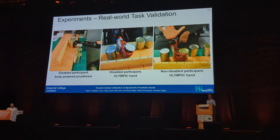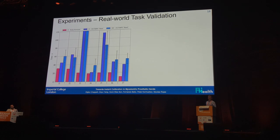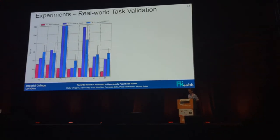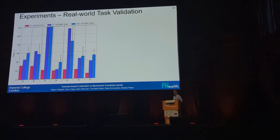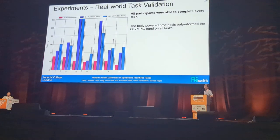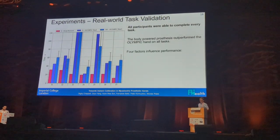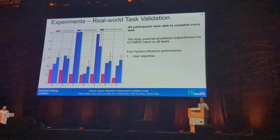You might notice that the disabled participant is really fast — much, much better than anything we did. So we went home and screamed into the void for a couple of days, then started analysing. Caveat: all participants were able to complete every task, which is good. However, the body power prosthesis outperformed the Olympic hand on every single task, and we reckon it's down to about four factors.